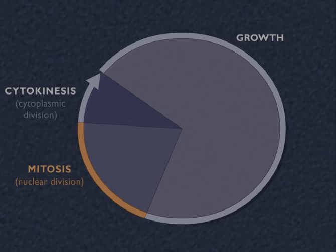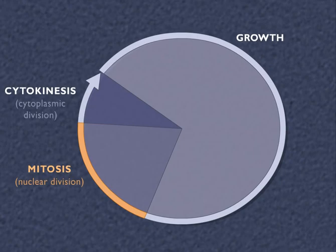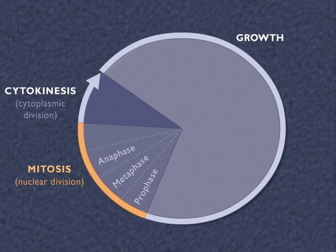Mitosis, or the M phase, has four stages: prophase, metaphase, anaphase, and telophase.